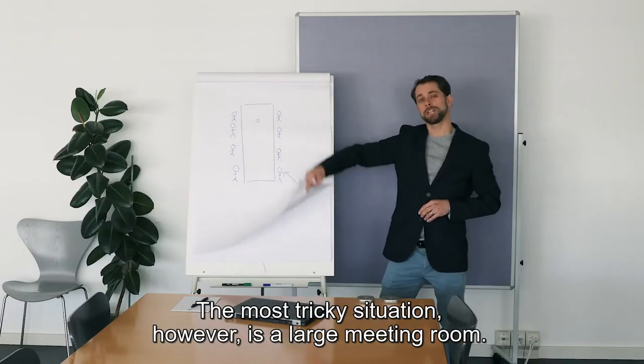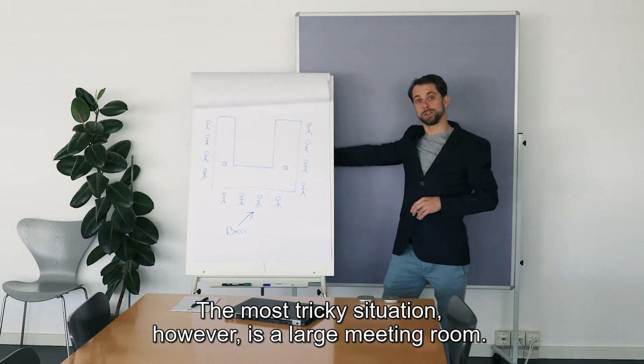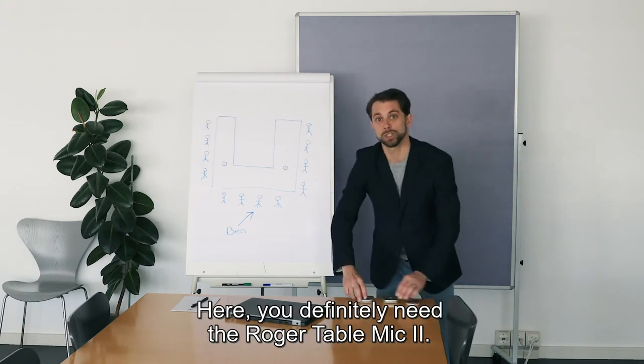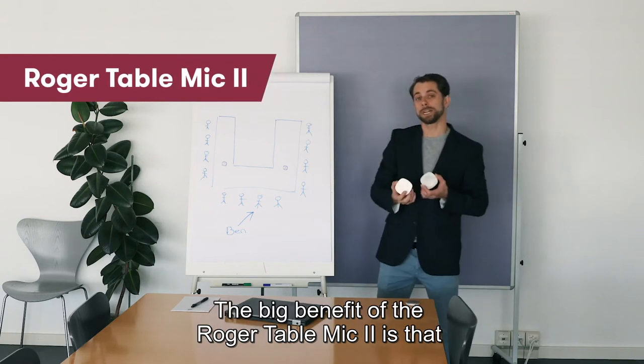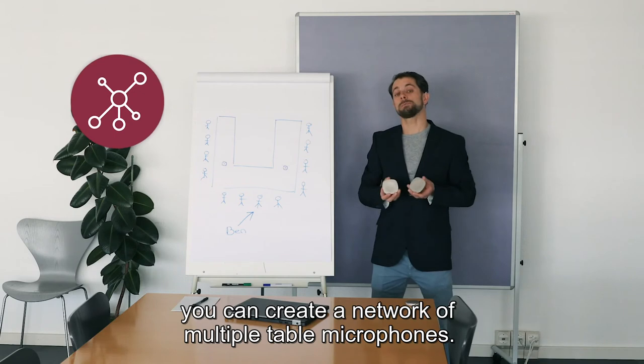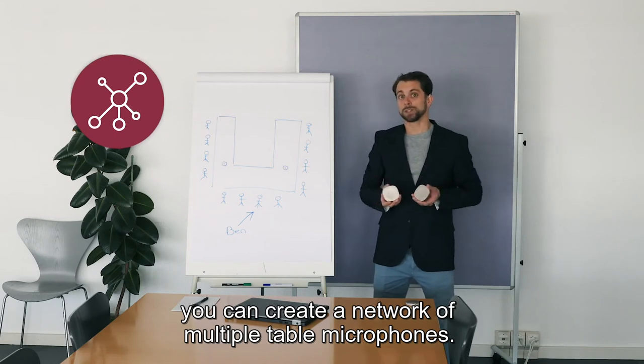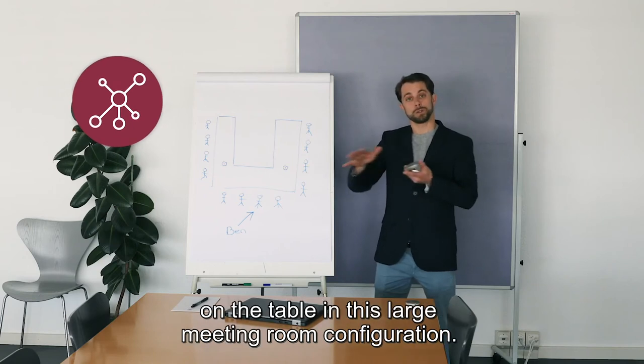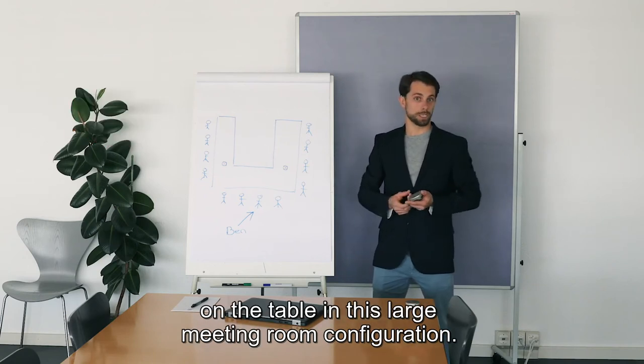The most tricky situation, however, is a large meeting room, something like this. Here, you definitely need the Roger Table Mic 2. The big benefit of the Roger Table Mic 2 is that you can create a network of multiple table microphones. You can place two or even more of them on the table in this large meeting room.